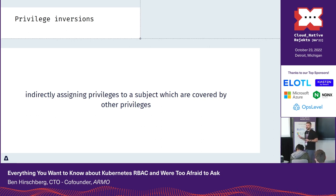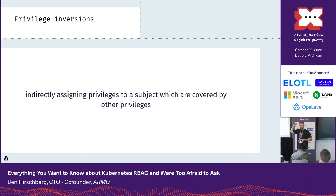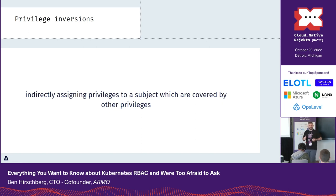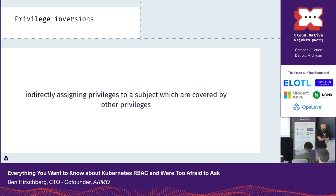It turns out I was writing real-time operating systems software for many years and there's a concept called priority inversion. My brain just translated that over. So from now on, understand that this is a thing: privilege inversion is the definition of inadvertently assigning privileges to a subject which should be covered by other privileges.